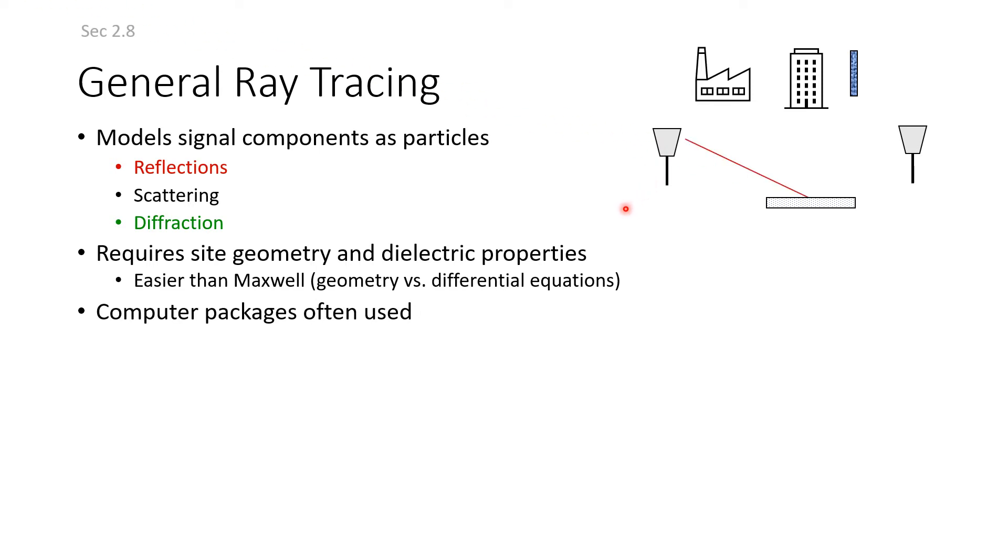Computer packages are used. One ray goes from here, reflected from the floor getting back. Another ray with diffraction here. We look at the main path, not the details of the object. Another reflection from this building, plus the main line-of-sight component between transmitter and receiver. Reflections generally dominate.